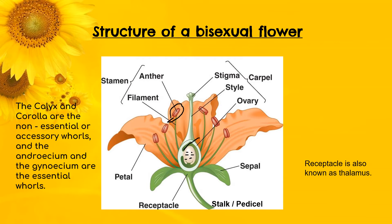Now let's look at the non-essential and the essential whorls of the flower. The first two whorls — the calyx and the corolla — are the non-essential or accessory whorls, and the androecium and the gynoecium, the third and the fourth whorls, are the essential whorls. By essential, we mean that they take a direct part in the reproduction of the flower, while the calyx and the corolla — the petals and the sepals — do not.